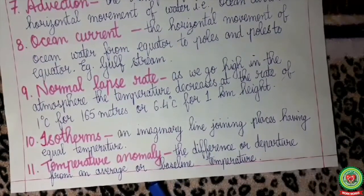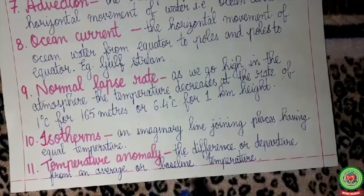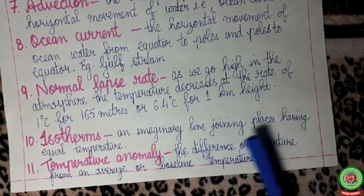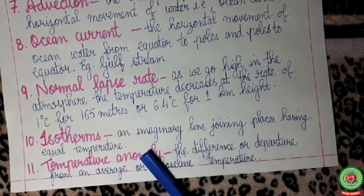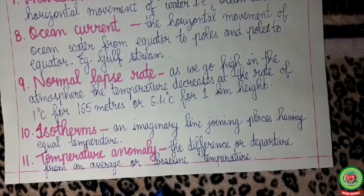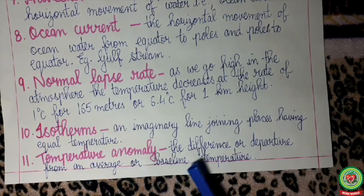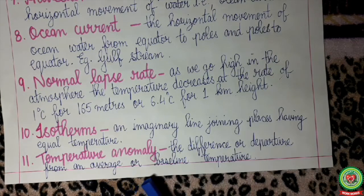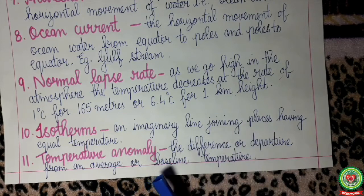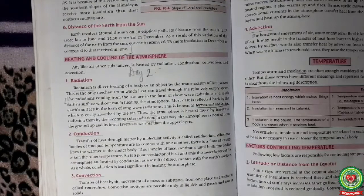Isotherm — an isotherm is an imaginary line joining places having equal or same temperature. Temperature anomaly — the difference or departure from the average or the baseline temperature is termed as temperature anomaly.